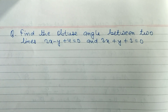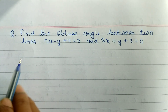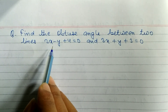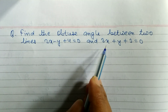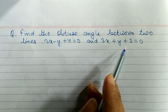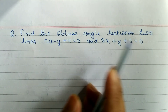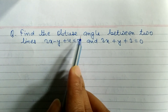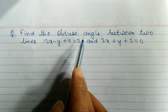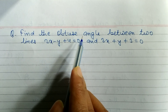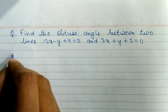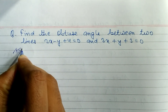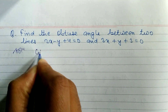Find the obtuse angle between two lines. Two straight lines are given: 2x minus y plus 4 is equal to 0, and 3x plus y plus 3 is equal to 0. We have to find the obtuse angle. Obtuse angle means more than 90 and less than 180 degrees. Let's start the solution.